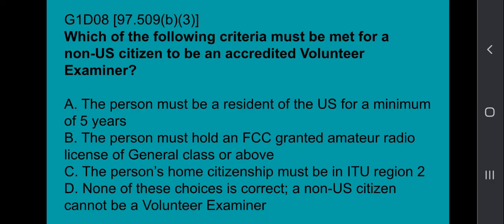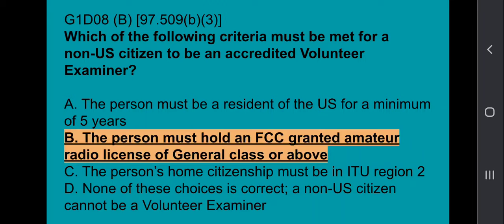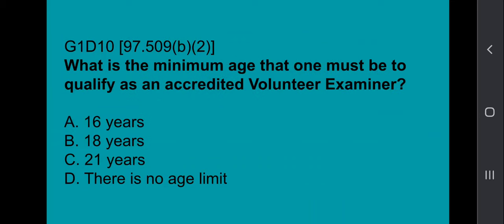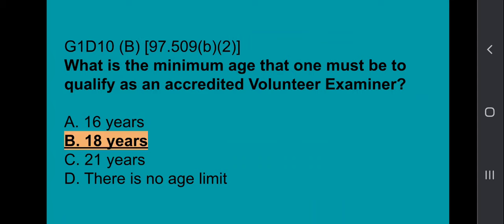G1D08: Which of the following criteria must be met for a non-U.S. citizen to be an accredited volunteer examiner? The person must hold an FCC-granted amateur radio license of general class or above. G1D09: How long is a Certificate of Successful Completion of Examination, a CSCE, valid for exam element credit? That's going to be 365 days. G1D10: What is the minimum age one must be to qualify as an accredited volunteer examiner? That's 18 years old.